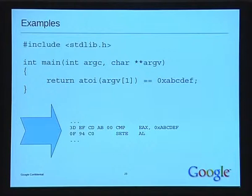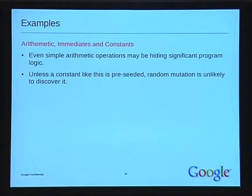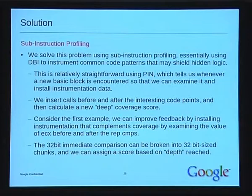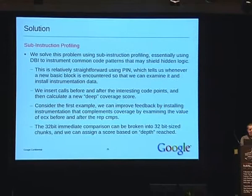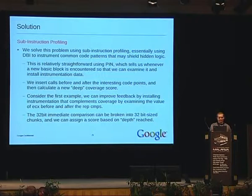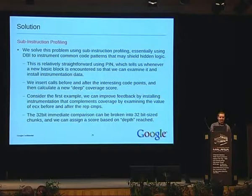Even simple arithmetic operations can be hiding significant program logic that basic block coverage tells you nothing about. Sub-instruction profiling is my solution. I solve this by using DBI to instrument these routines. Using PIN — which is what my current implementation is written in — PIN will notify you when a new basic block is encountered, and then you can examine the basic block and install instrumentation. I take the existing code coverage score based on basic blocks and add a new deep coverage score that looks deeper into the instructions — assigning a coverage score based on how deep you got into a comparison or string comparison.